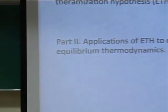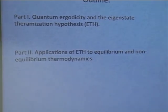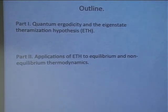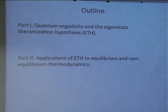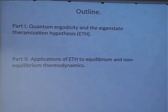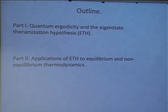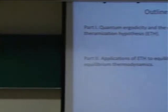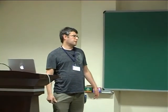I'll split the lectures into two parts. First, I'll talk about quantum ergodicity and the eigenstate thermalization hypothesis at a basic level — the concepts, when they work, when they don't, with some examples. In the second part, I'll show how you can use the eigenstate thermalization hypothesis to make statements in equilibrium and non-equilibrium thermodynamics, including the laws of thermodynamics and fluctuation theorems.